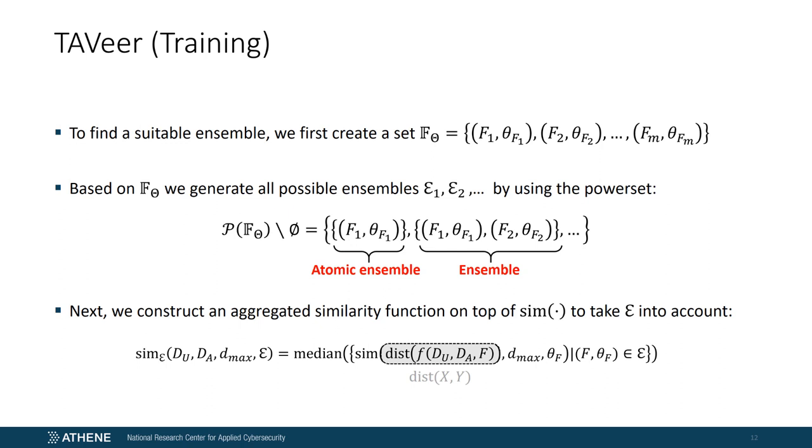Since now we are dealing with ensembles and not with single feature categories, we need an aggregated similarity function, which we denote by sim_ε, to take ensembles into account. Sim_ε takes as an input the unknown and known document, D_max so the upper bound of the distance function, and the respective ensemble. And based on these, the function first computes for each feature category and its associated threshold the respective similarity score, given the similarity function introduced in the previous slide. Finally, sim_ε determines the median for the similarity scores computed for all feature categories, so that at the end we get a single aggregated similarity value.